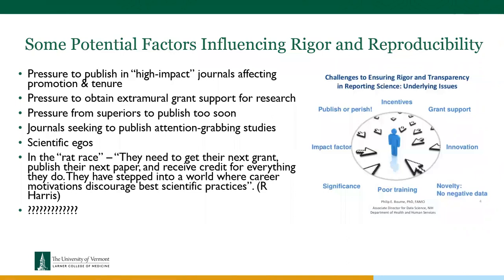What do you do when you find an error in someone else's published work? We all understand it's hard to do good science. There are cases where one researcher brings an error to an author's attention, the author disagrees there's an error, and you're left in this position where the error is obvious to an outside reader but the author won't acknowledge it. Where can we go to collaboratively make corrections?